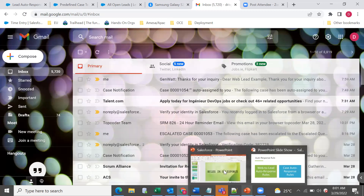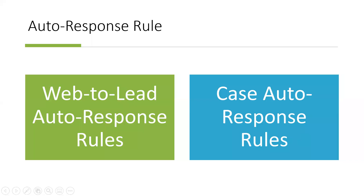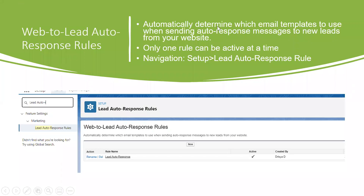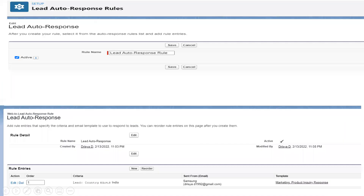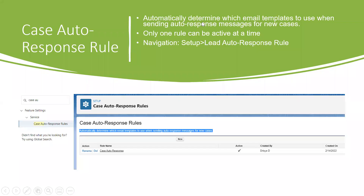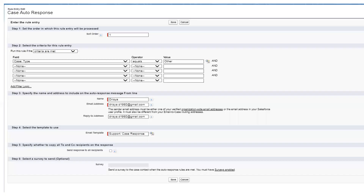Any doubts on auto response? I've included the definitions and navigation here. It will automatically use whichever email template you specify when sending auto response messages to new leads from the website. Navigation is setup → lead auto response rule, and only one rule can be activated. Case auto response rule is similar — it also sends an email using a defined template for new cases, only one can be active at a time, and navigation is setup → case auto response rule.